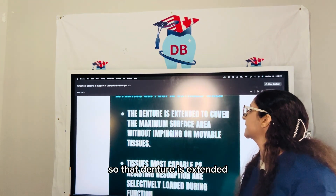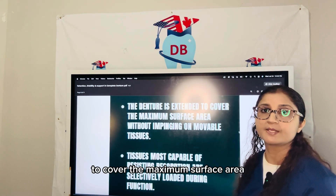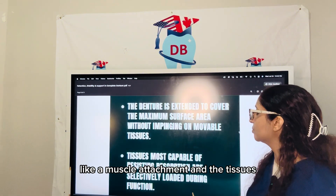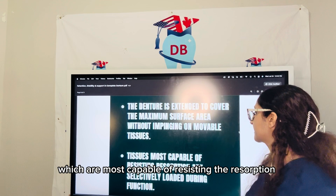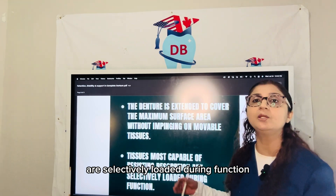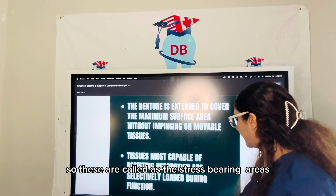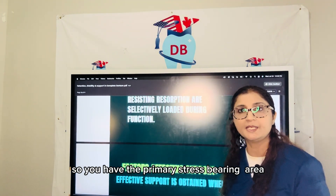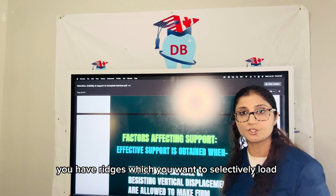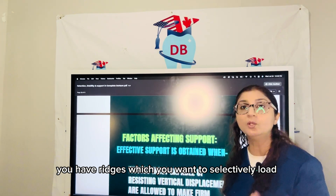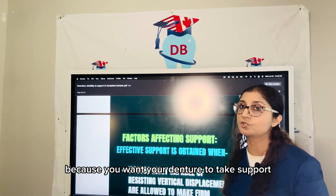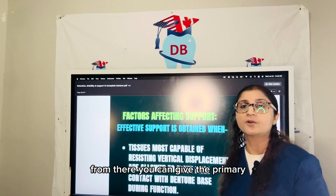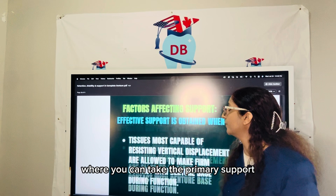The denture is extended to cover the maximum surface area without impinging on movable tissues like muscle attachments. The tissues most capable of resisting resorption are selectively loaded during function — these are called the stress bearing areas. The primary stress bearing area for the maxilla includes the hard palate and the ridges, which you selectively load while taking the impression. For the mandibular denture, it is the buccal shelf area from where you take the primary support.